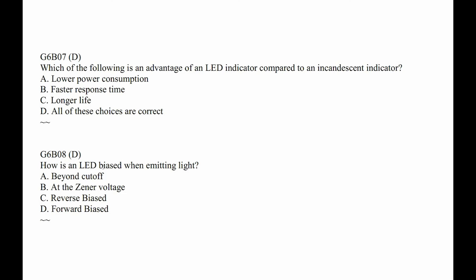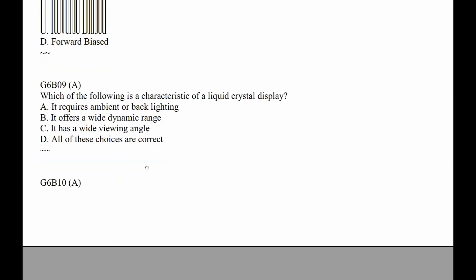G6B08. How is an LED biased when emitting light? It's forward biased. You put a resistor in series with it. G6B09. Which of the following is a characteristic of a liquid crystal display? They're the kind that don't light up and they're sort of grayish looking. The answer is A — it requires ambient or backlighting.